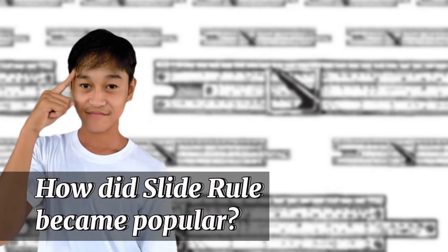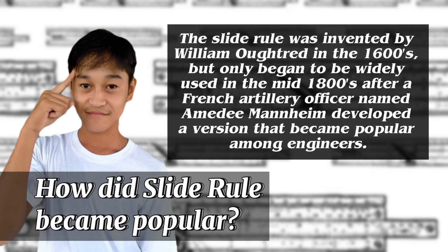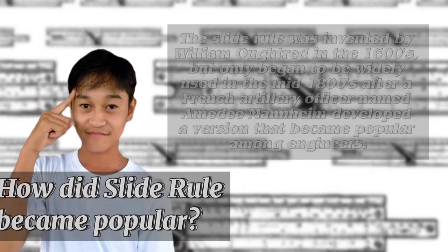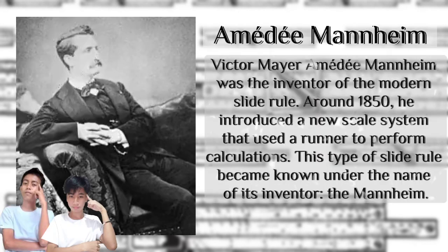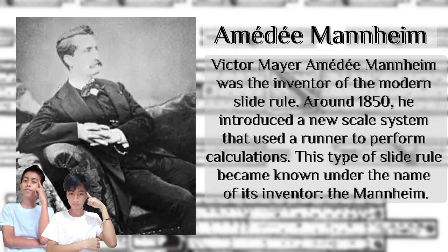How did the slide rule become popular? The slide rule was invented by William Orchard in the 1600s, but only began to be widely used in the mid-1800s after a French artillery officer named Amédée Mannheim developed a version that became popular among engineers. Mannheim was the inventor of the modern slide rule. Around 1850, he introduced a new scale system that used a runner to perform calculations. This type of slide rule became known under the name of its inventor, the Mannheim.